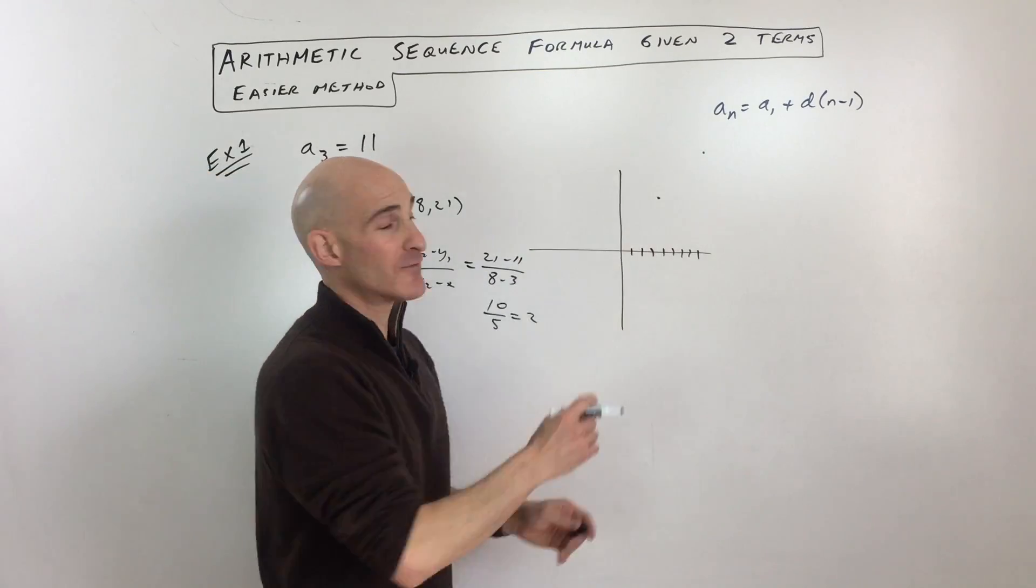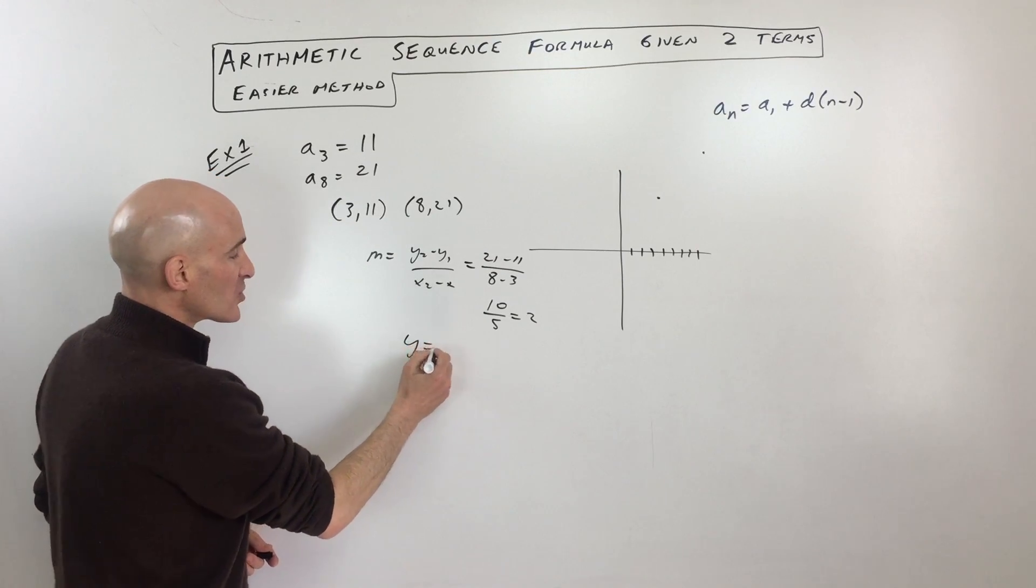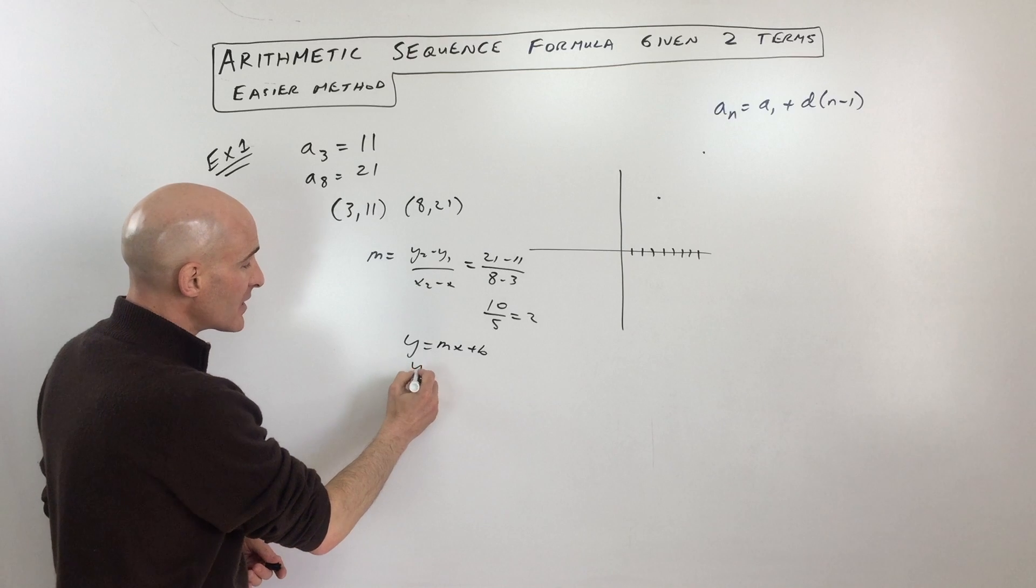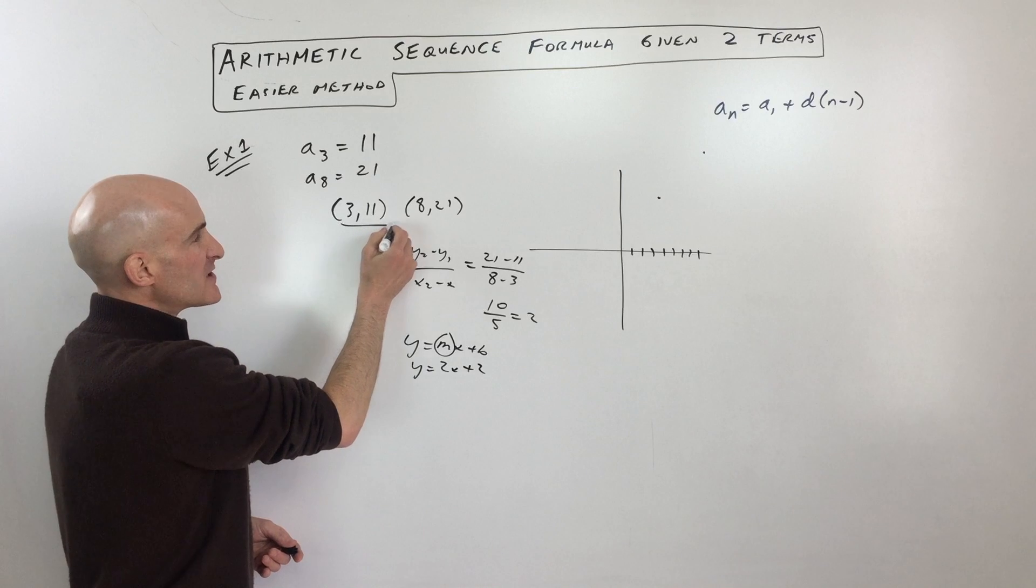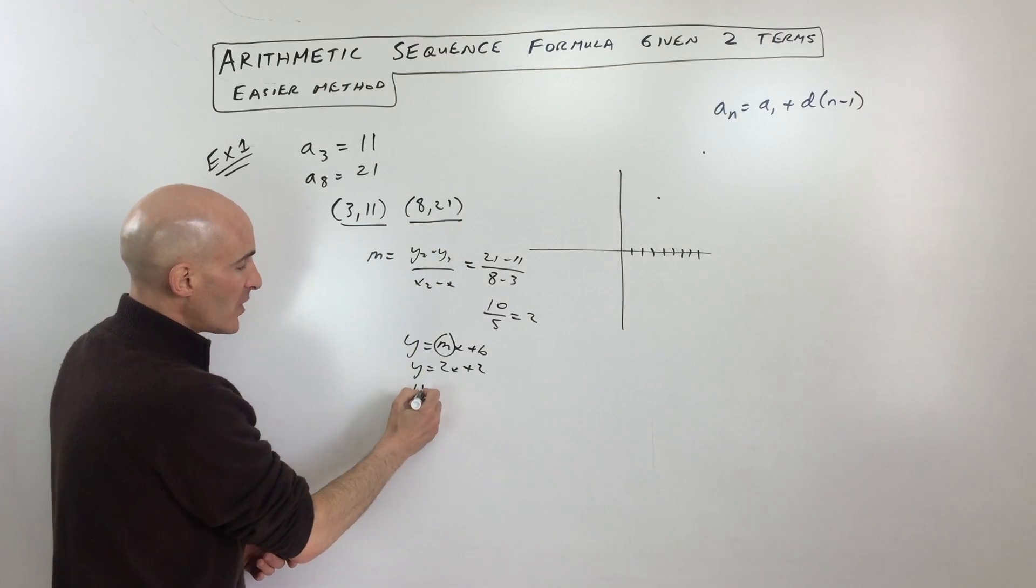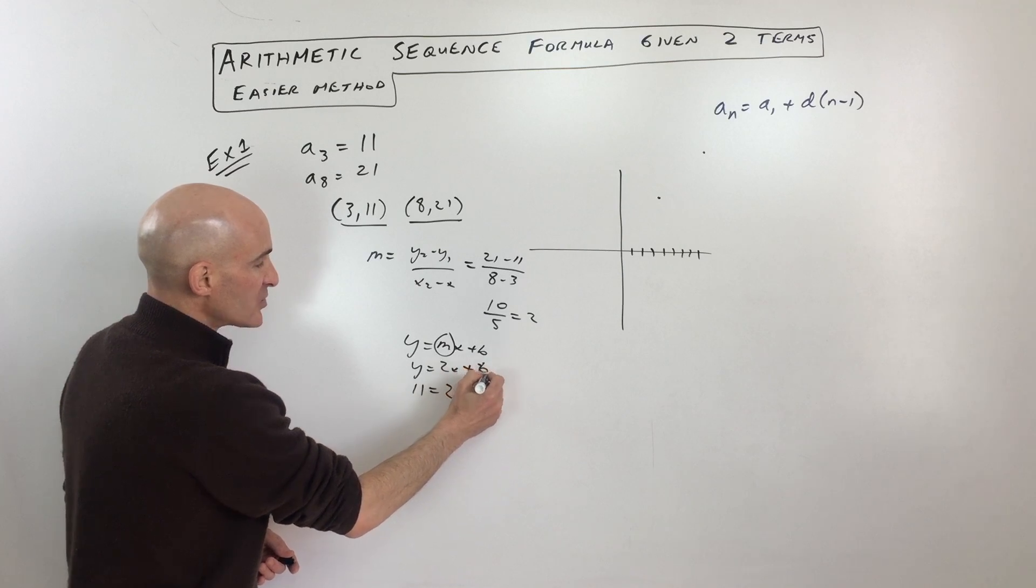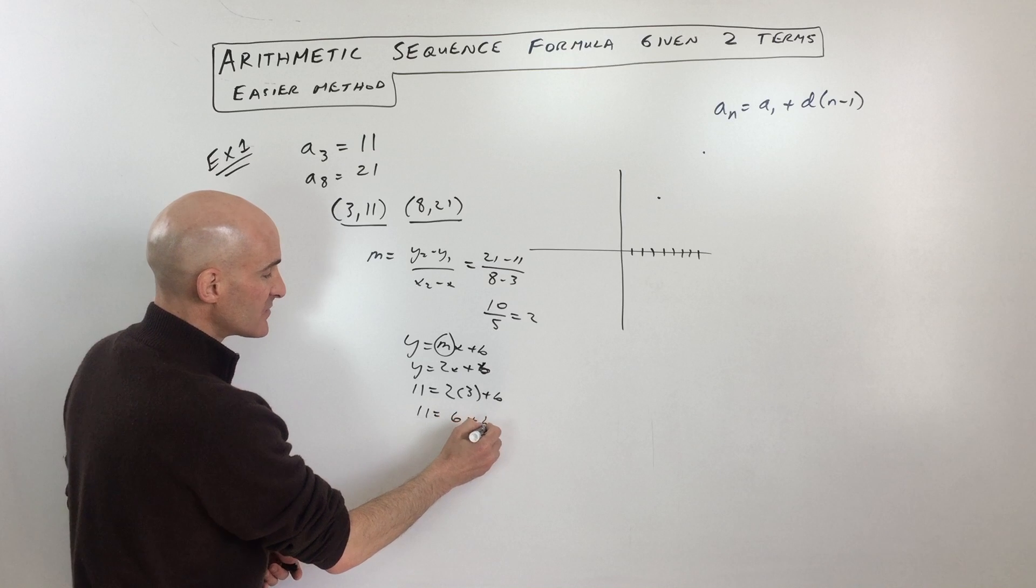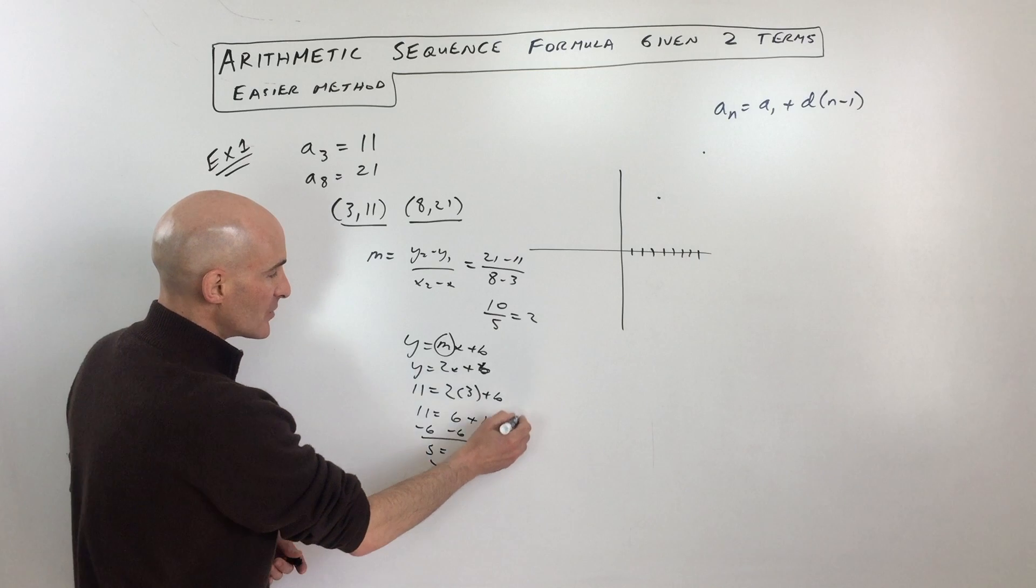We know this is going up at a constant rate of 2 each time to get to the next term. Then we can use our slope intercept form of a line, y equals mx plus b. We know we're going up by 2, so that's our slope, that's our m value. Pick one of the points—I'm going to pick the first one—when y is 11, x is 3, and we can solve for b. That's going to be 11 equals 6 plus b. Subtract 6 from both sides and you can see that b equals 5. I'm just going to put that back in, so we have y equals 2x plus 5.